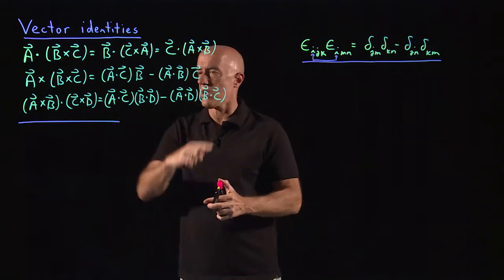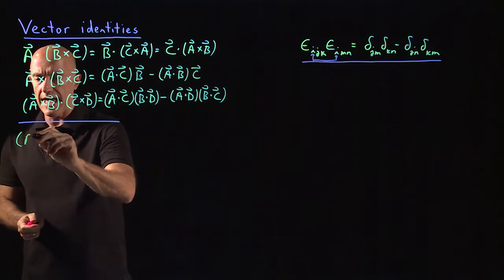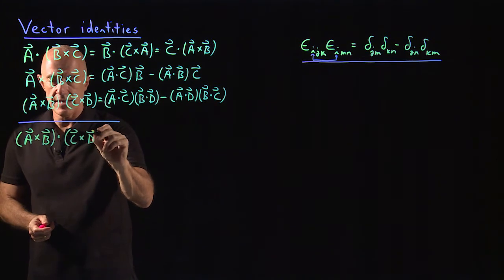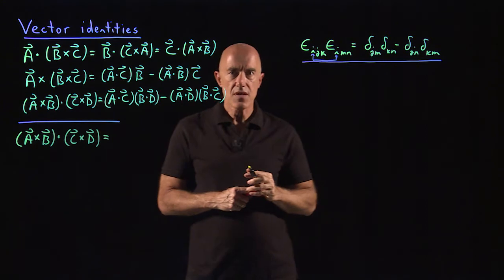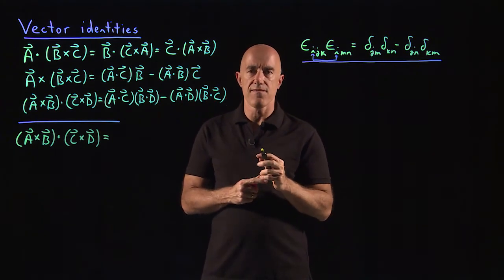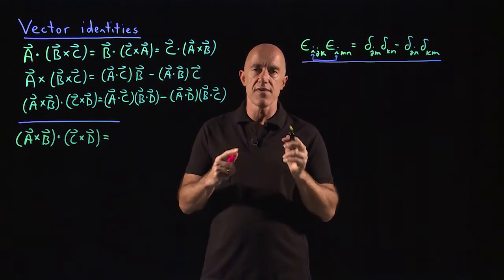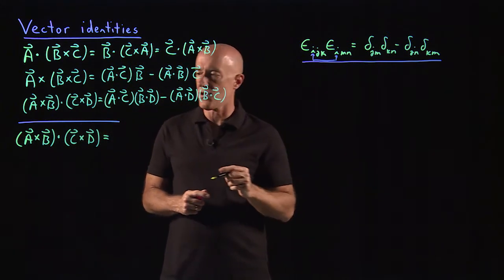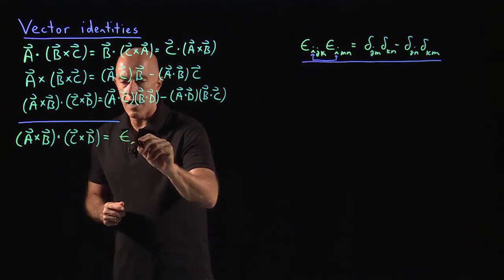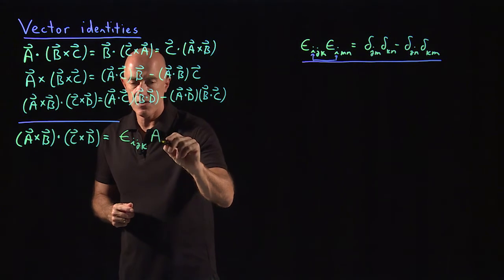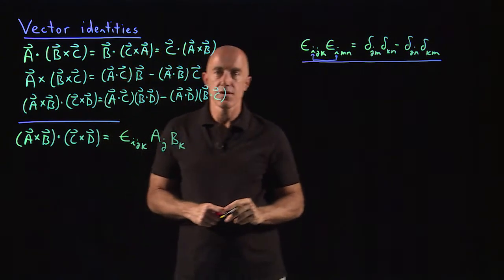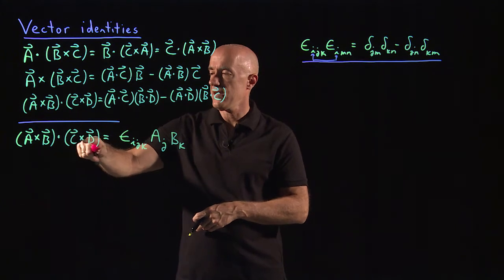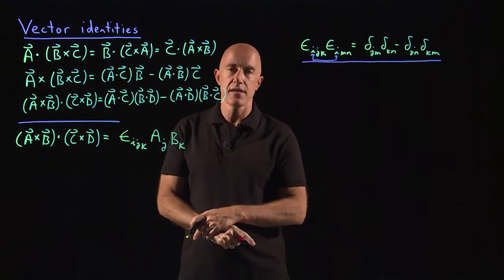So let's work on this third one. So we have (A×B)·(C×D). So how do we write that? Well, remember, we have the formula for the cross product in terms of the Levi-Civita tensor. So this cross product, A×B, the i-th component of that cross product is epsilon_ijk times a_j times b_k. So that's the i-th component of A×B.